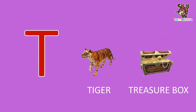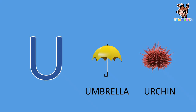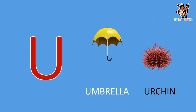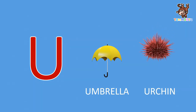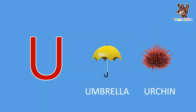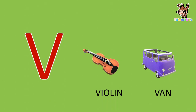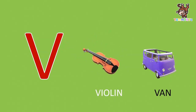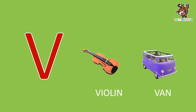U, U for umbrella, Urchin. V, V for violin, Van.